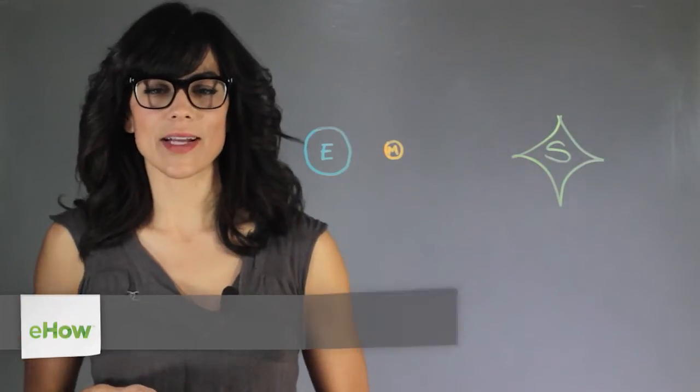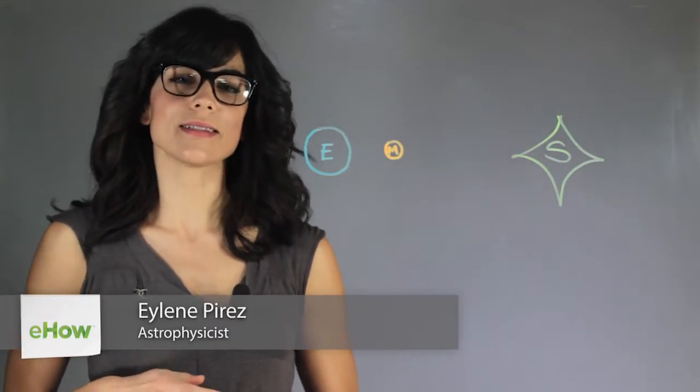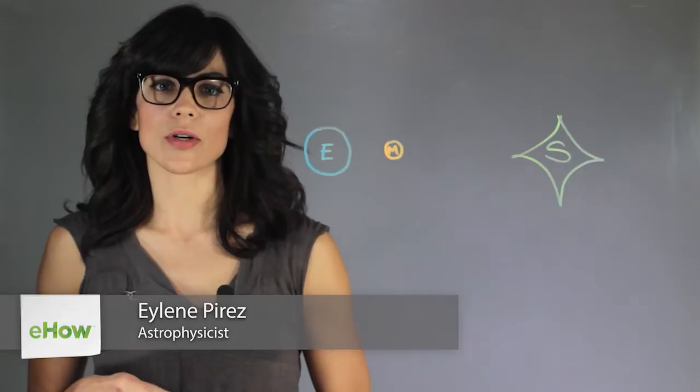Hi, my name is Eileen Perez and I'm an astrophysicist and this is Sizes and Distances of the Sun Earth and Moon System.